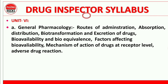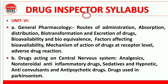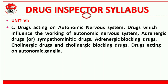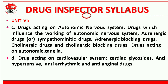Unit 6 is where pharmacology begins: general pharmacology and drugs acting on the central nervous system (CNS). Unit 6 also covers drugs acting on the autonomic nervous system (ANS), drugs acting on the cardiovascular system (CVS), as well as diuretics and anti-diuretics — all part of the Drug Inspector syllabus.